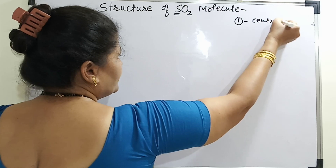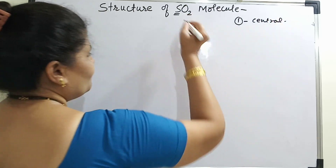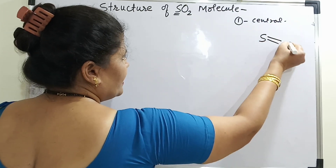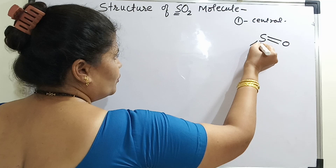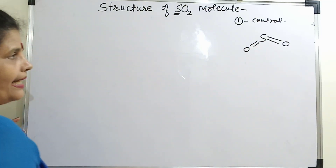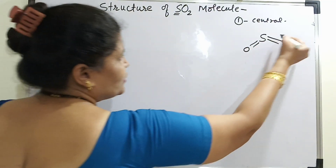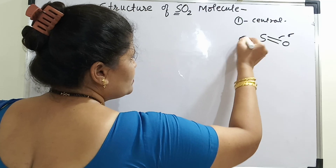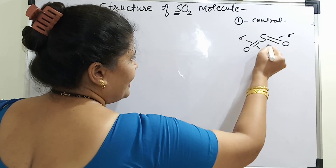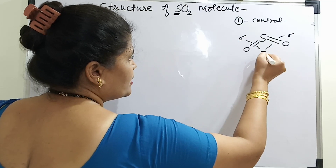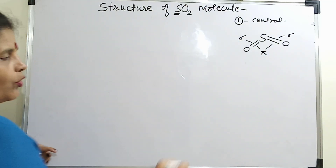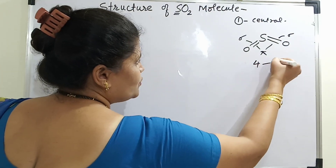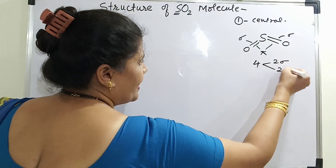If I try to draw the rough structure for SO2, the structure will be similar to your CO2 molecule. The first bond which is formed here is a sigma bond. So, there are 2 sigma and 2 pi bonds here. Out of those 4 bonds, what I have to form is 2 sigma and 2 pi.